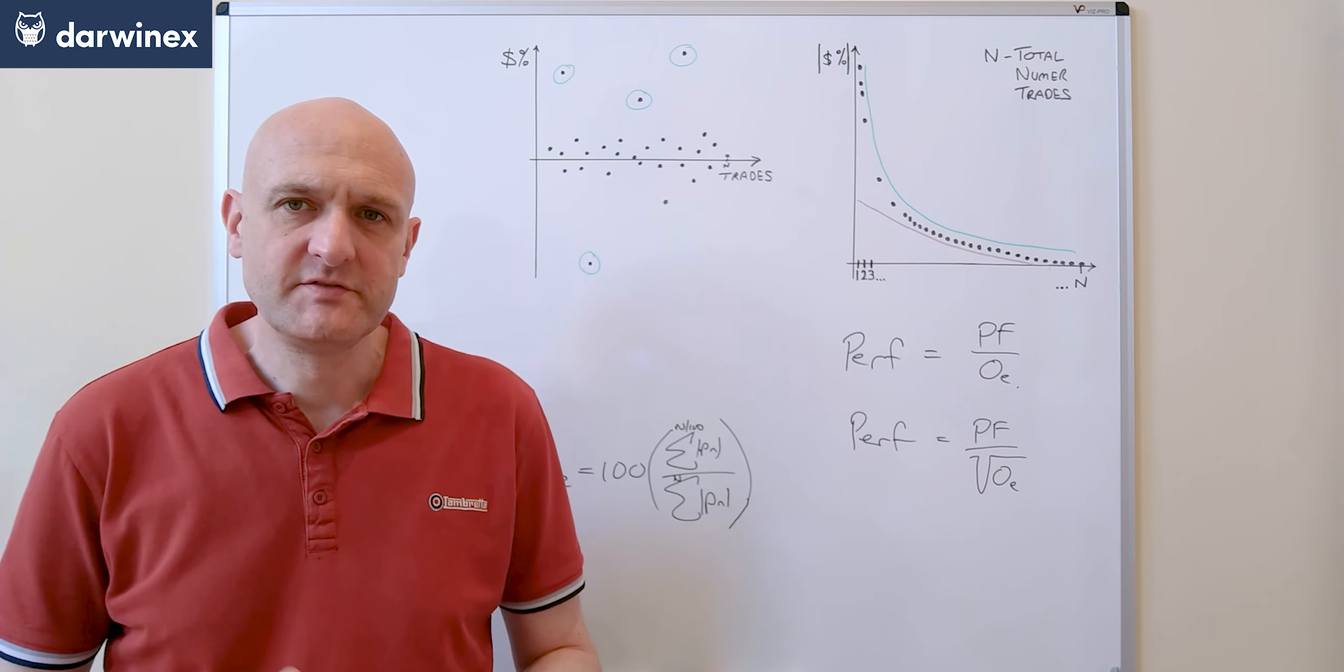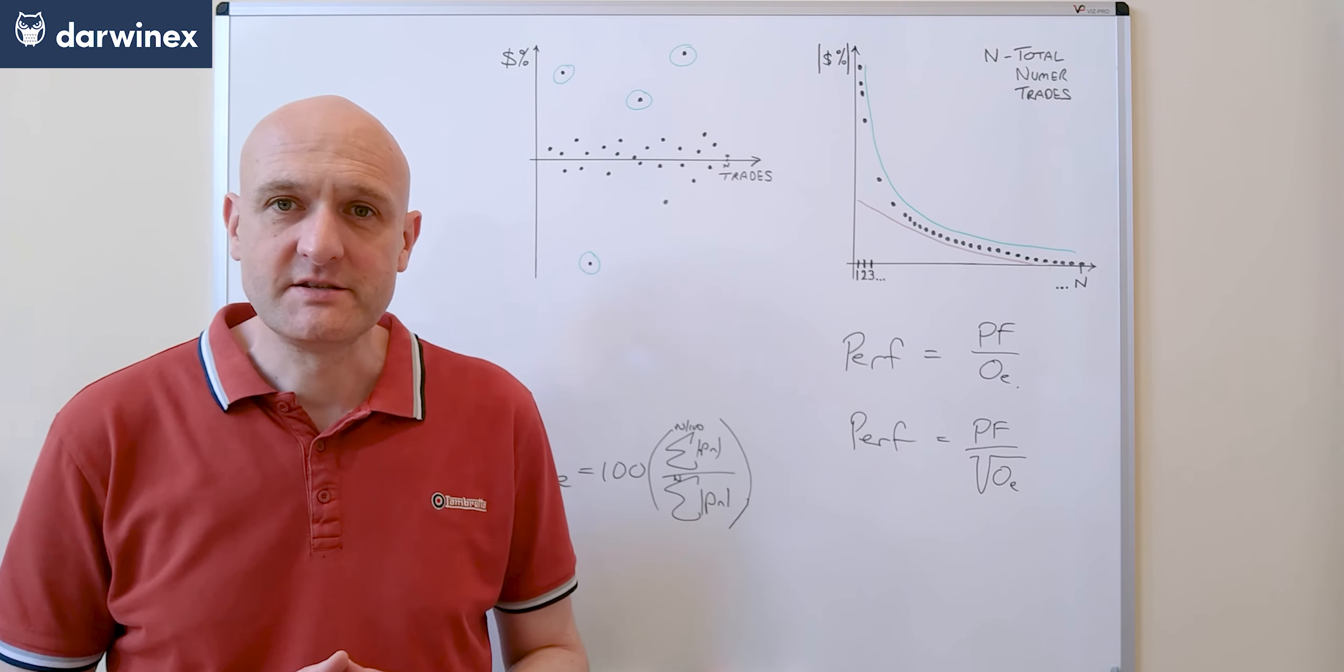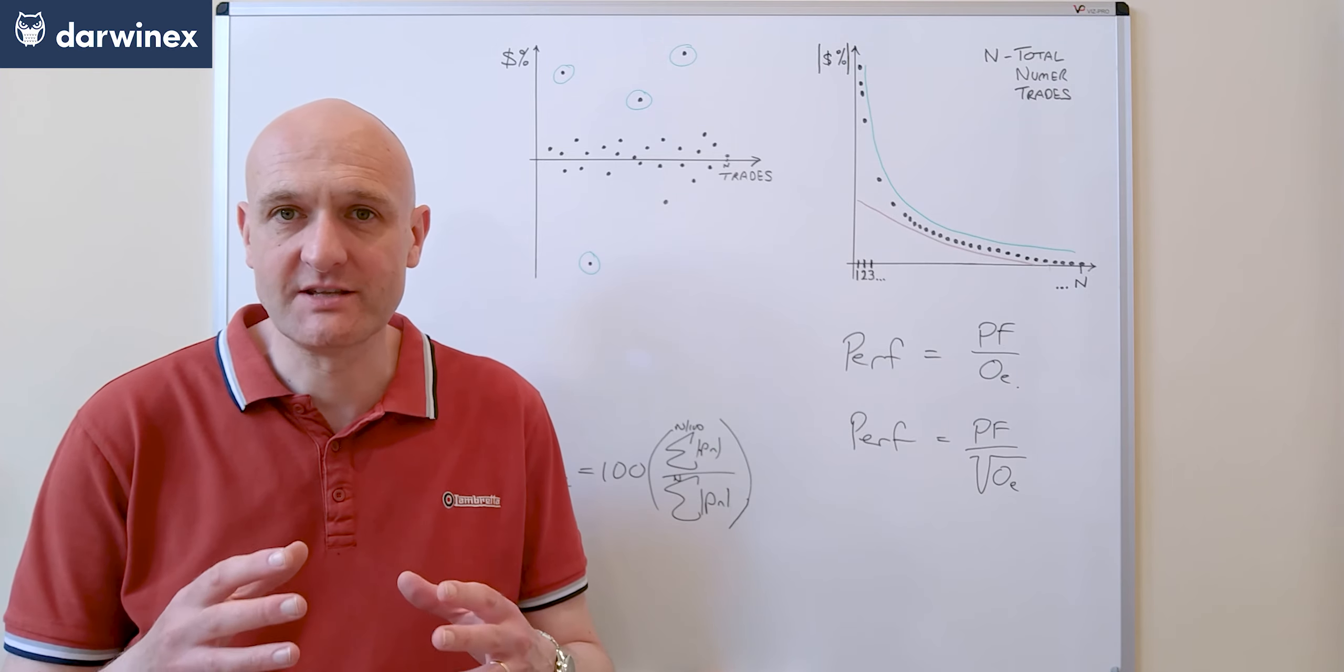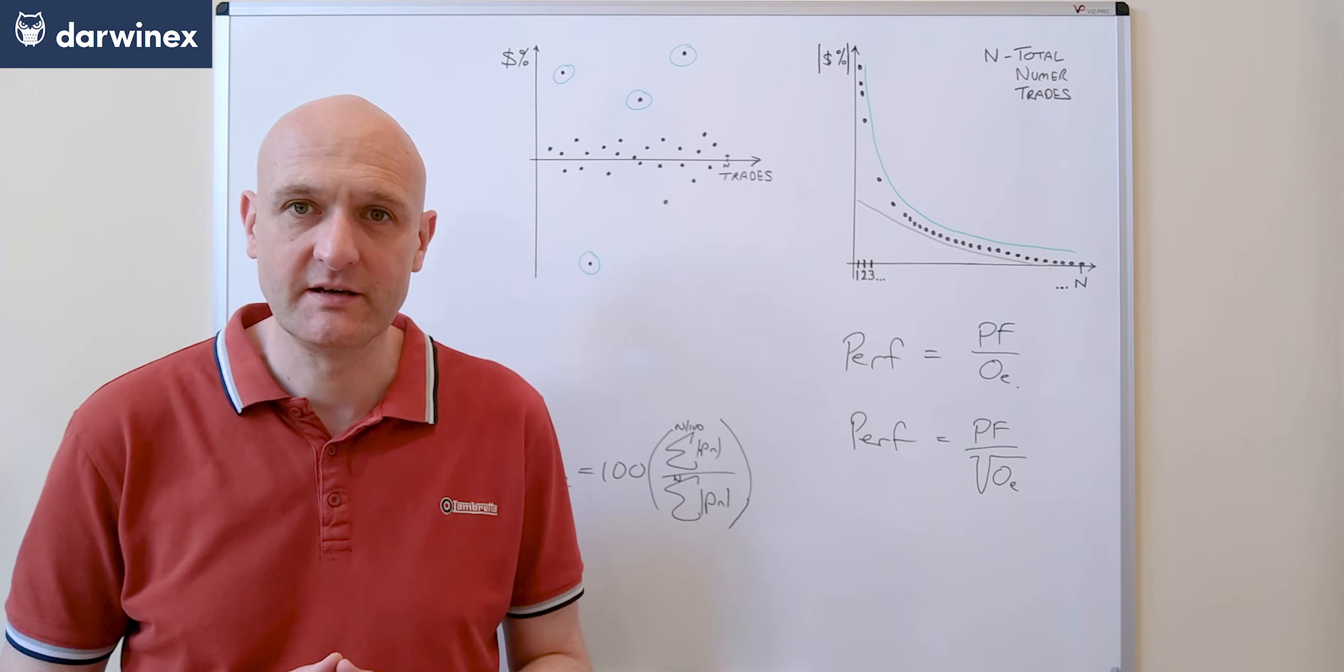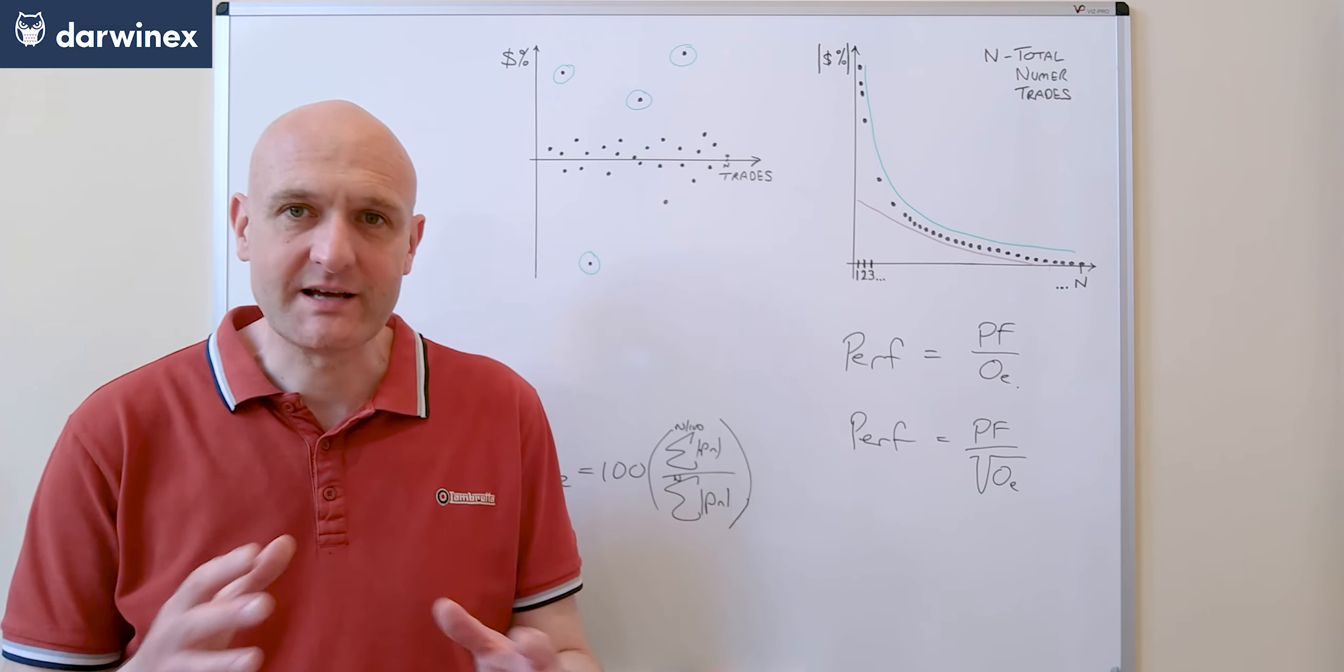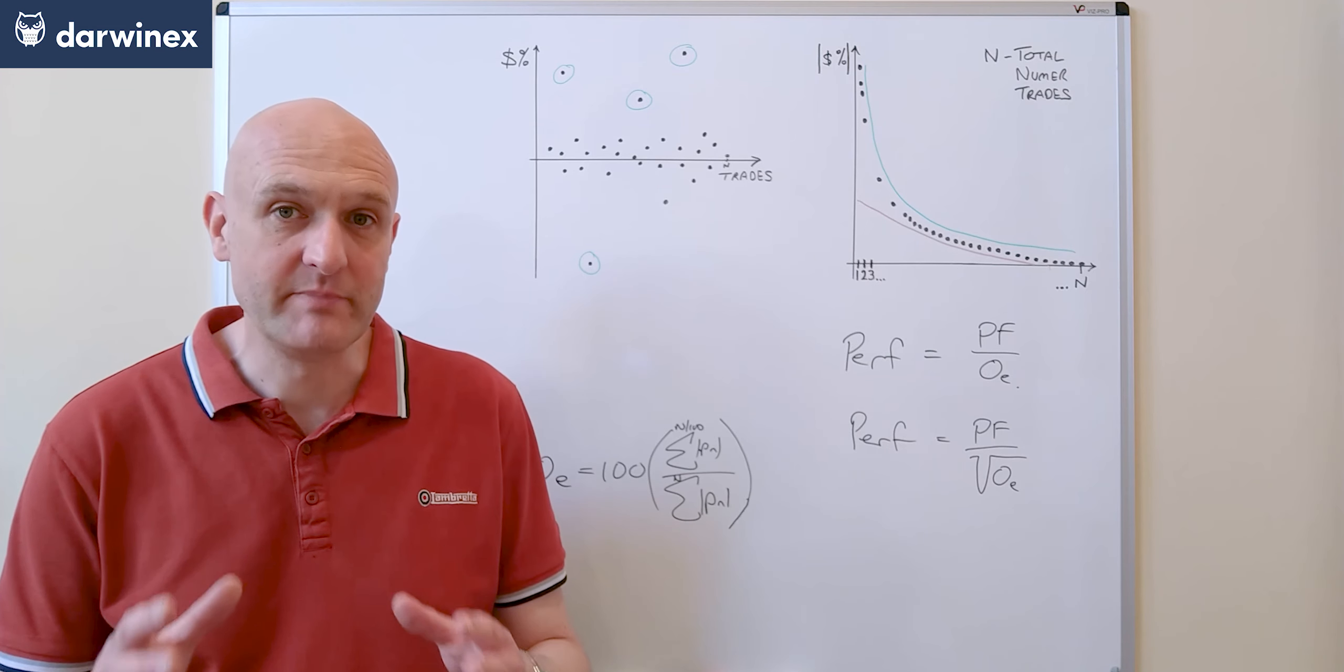Now the benefit of taking this approach as opposed to approach number one is that when you have really good parameter values they still have a chance of being selected even when they've suffered a little from overfitting, so it's less of a black and white decision. However I think we can do even better.